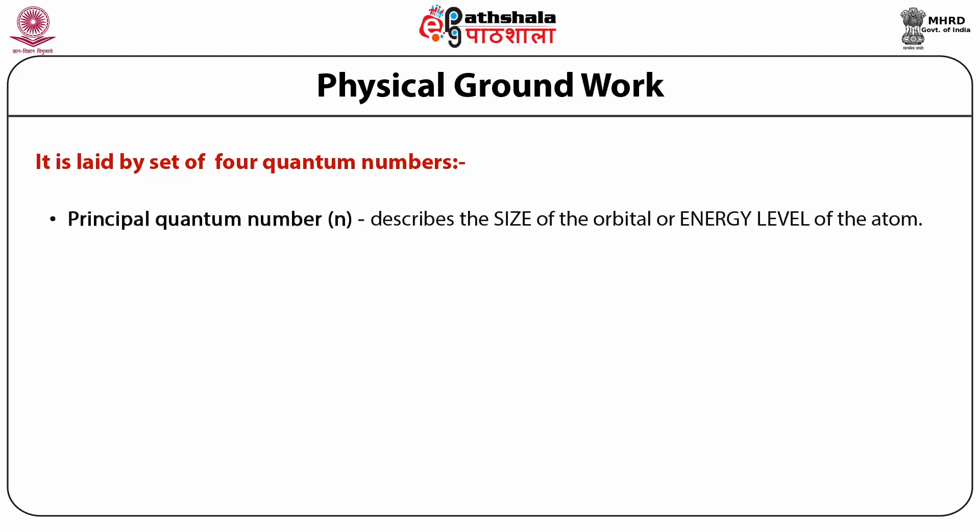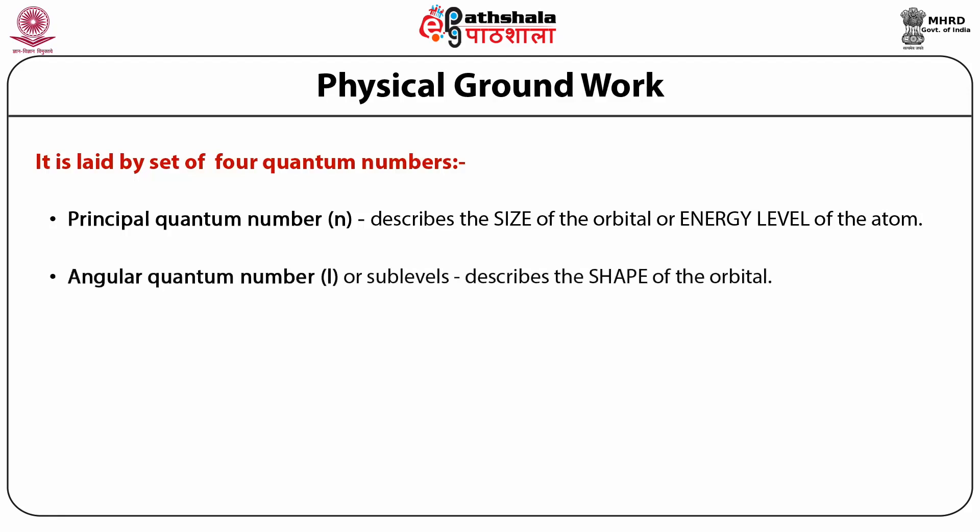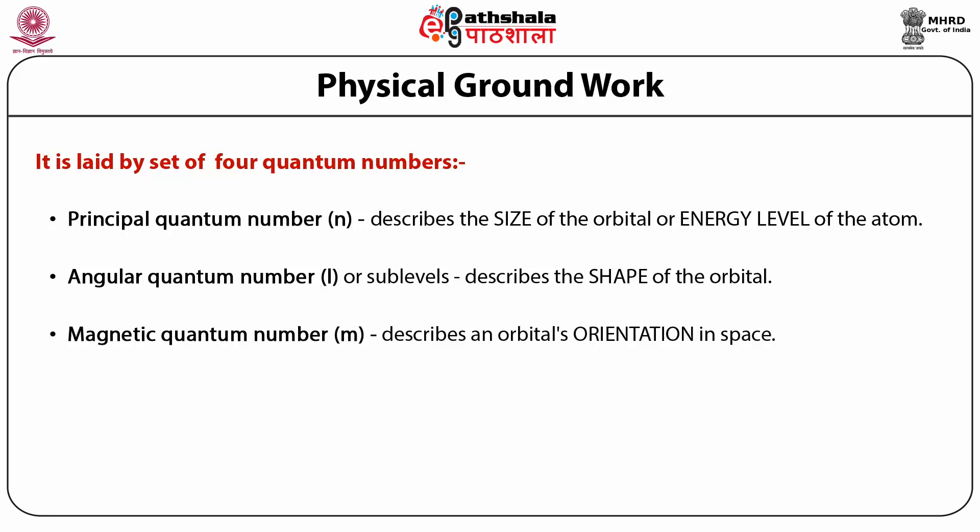The principal quantum number, represented by n, is one of four quantum numbers assigned to each electron in an atom to describe the electron state. The azimuthal (angular) quantum number, represented by l, determines the orbital angular momentum and describes the shape of the orbital. It is also known as the orbital angular momentum quantum number, orbital quantum number, or second quantum number. The magnetic quantum number, represented by m, describes an orbital and tells the orientation of the electron cloud in space.